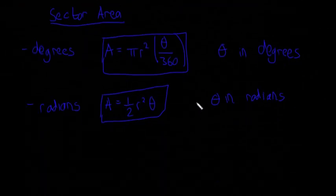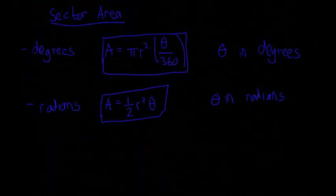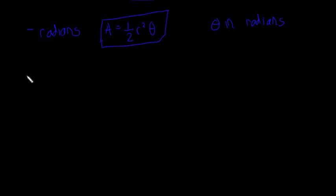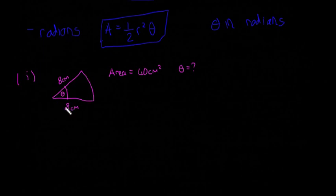Hopefully that makes sense. We're going to look at two quick examples. Example one: here's our example question. We have this sector with radius 8 centimeters and angle θ. The area is 40 cm² and we need to find angle θ. I'll start by writing out the formula for area.